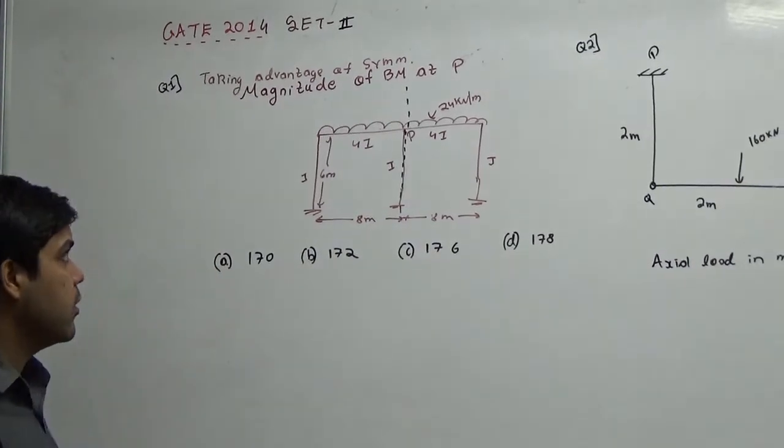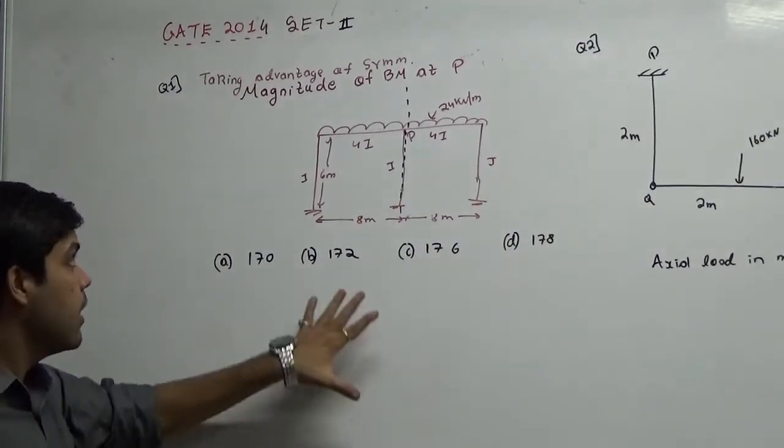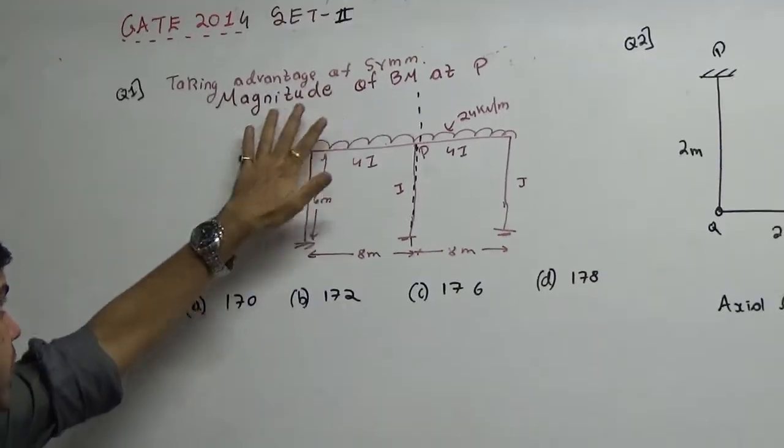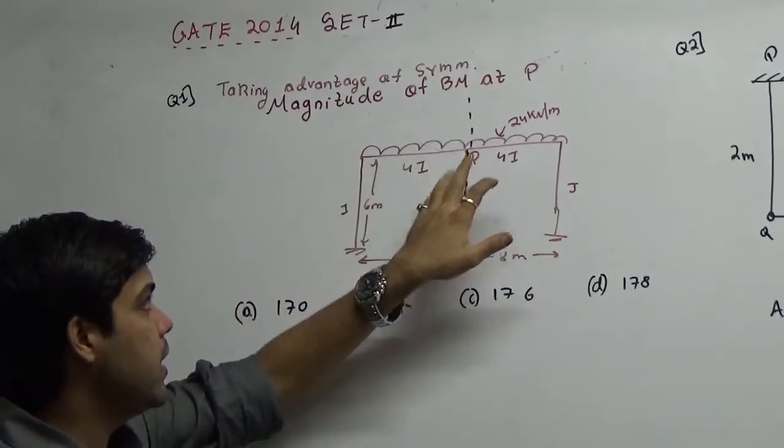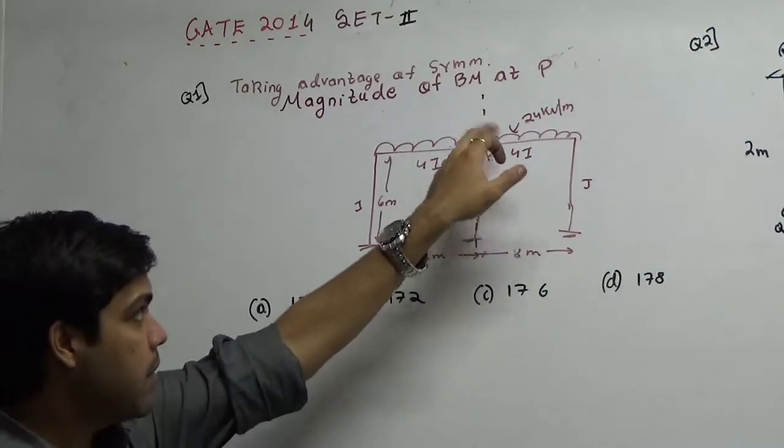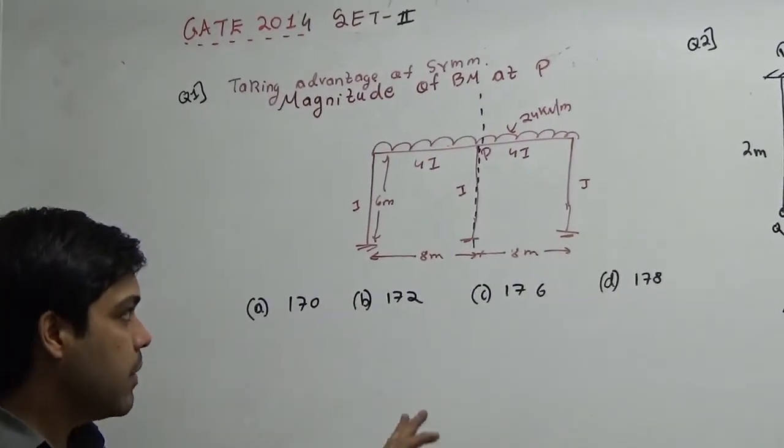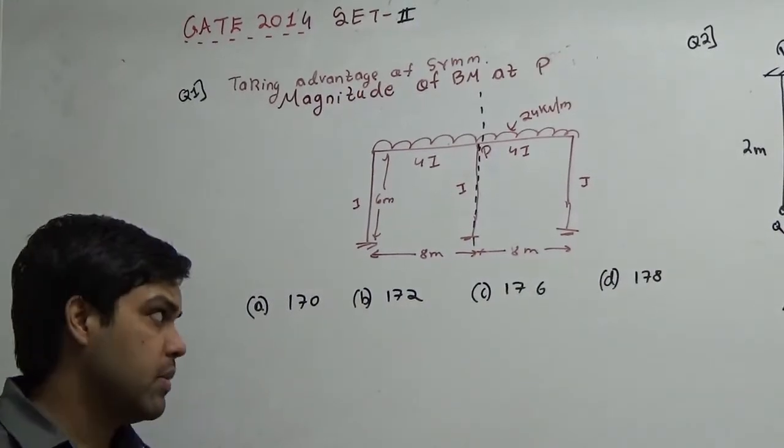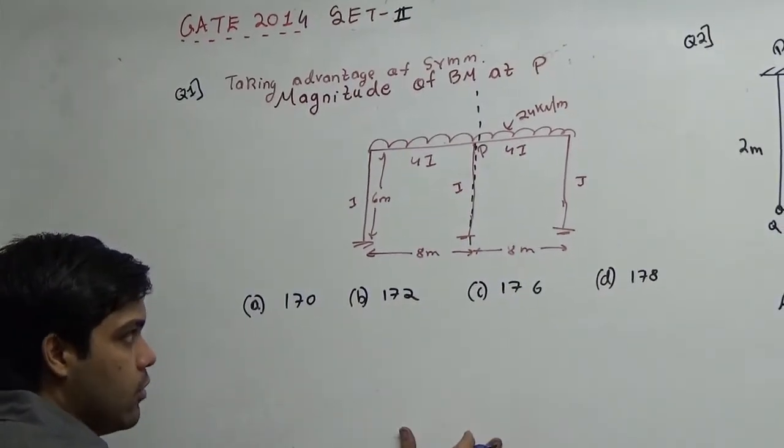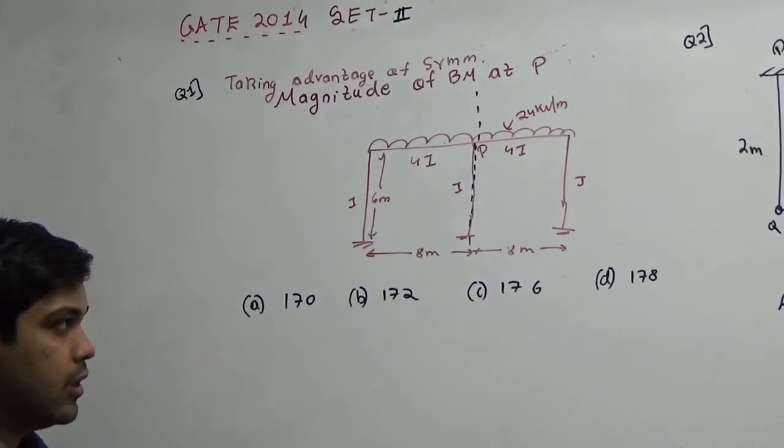The very first problem was on moment distribution method itself. The question said that taking the advantage of symmetry, the magnitude of bending moment at P is - in bracket it was written to solve it preferably by moment distribution. Actually the best method right now is moment distribution method and I am giving you the concepts in the video lectures.